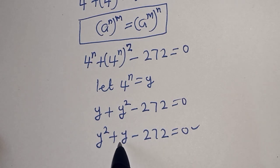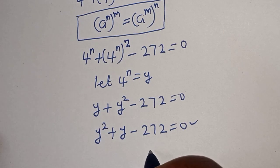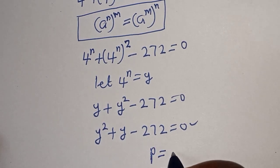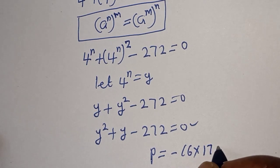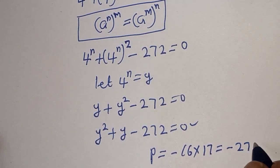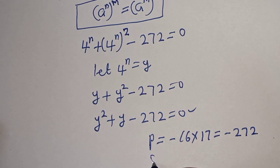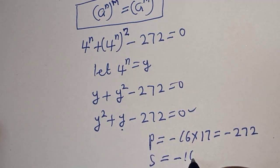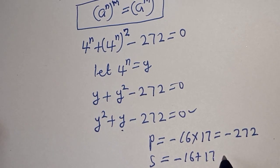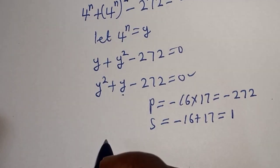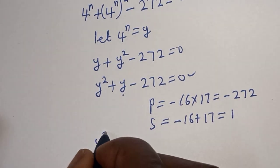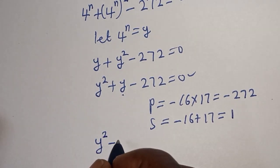The coefficient of y squared is 1 and the constant is minus 272. We need to find two numbers whose product equals minus 272 and whose sum equals 1. That gives us minus 16 multiplied by 17 equals minus 272, and minus 16 plus 17 equals 1.